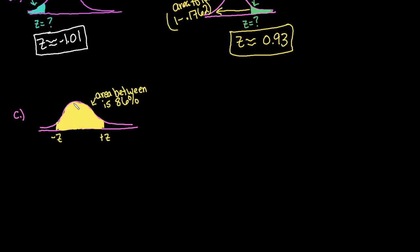All right, the last one that we're going to look at is the area between is 86%. That means that this area right here is 0.86 as a decimal. Remember that the entire area under the curve is 1. So each of these tails is equal to half of 1 minus the area between.